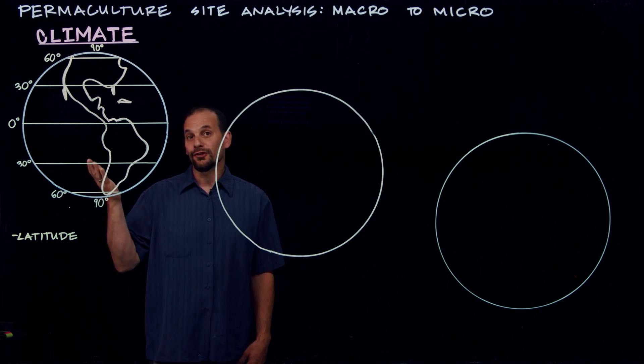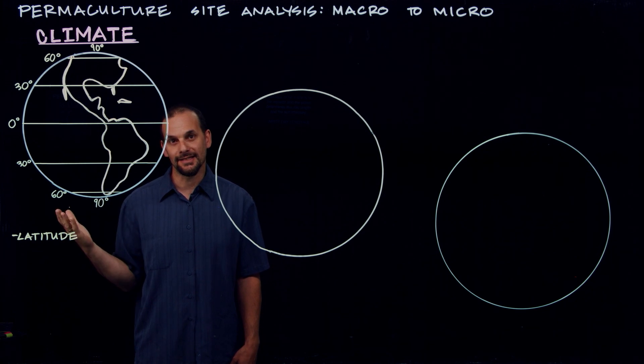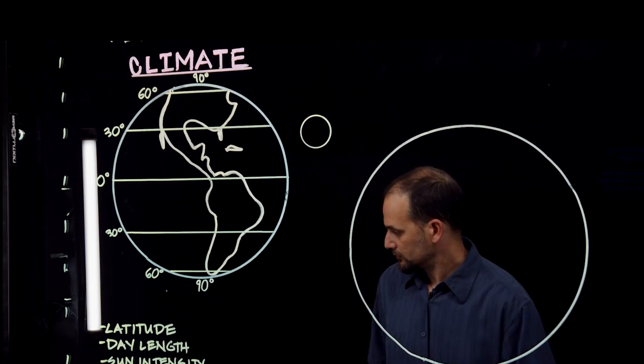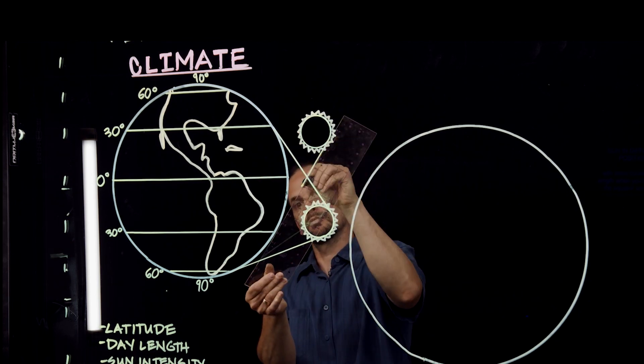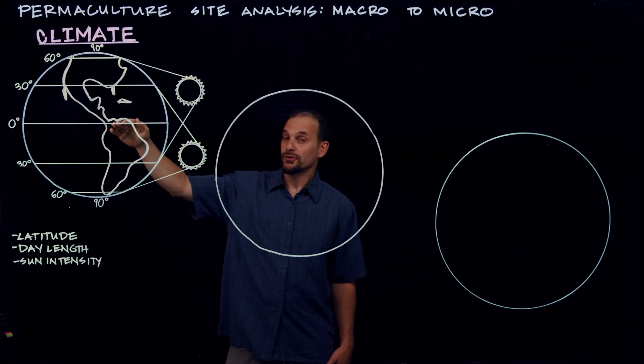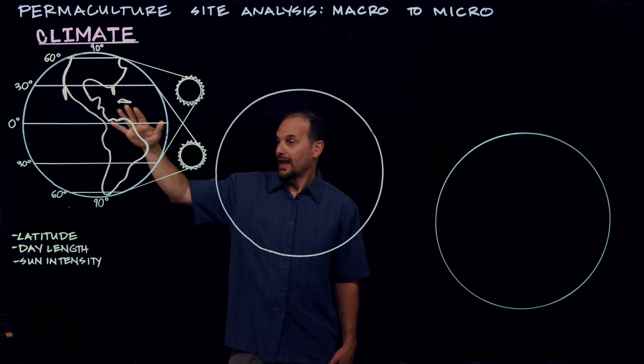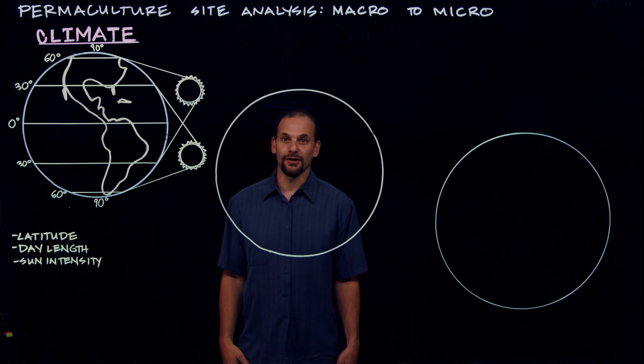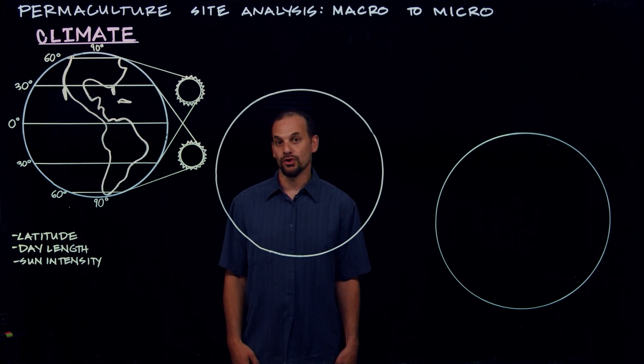How near or far a site is to the equator determines the day length and the sun intensity. With more consistent day length when you're closer to the equator, and greater seasonal changes in day length as we move farther from the equator and closer to the poles. There are also air currents that move around the Earth at different latitudes, which circulate moisture around the planet.